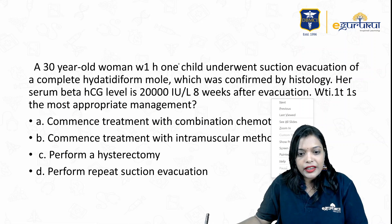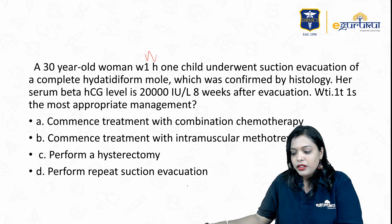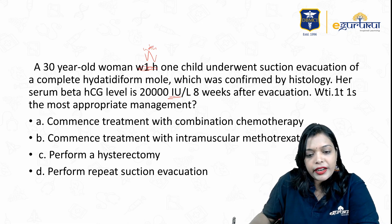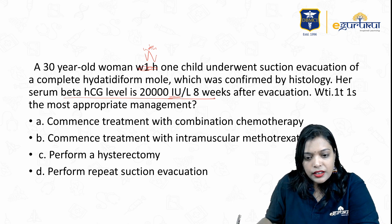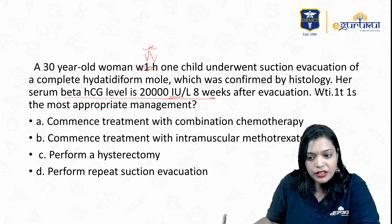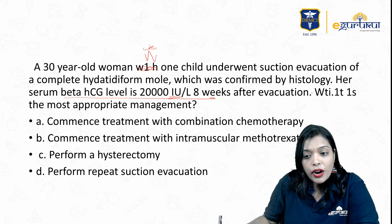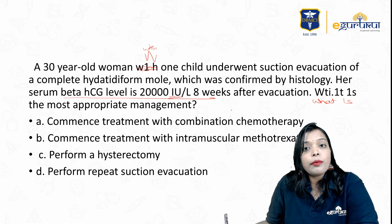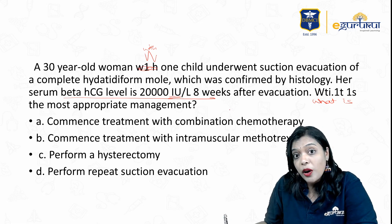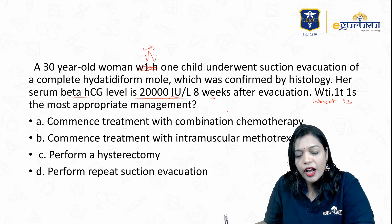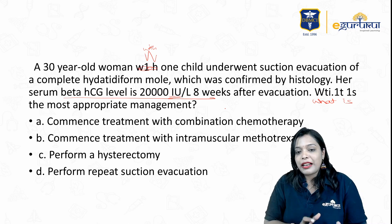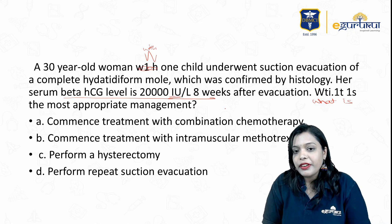A 30-year-old woman with one child underwent suction and evacuation of a complete hydatidiform mole, confirmed by histology. Her serum beta-HCG levels are 2 lakhs international units per litre 8 weeks after evacuation. What is the most appropriate management? After suction evacuation, normally when you are monitoring beta-HCG, beta-HCG should drop down. But here, instead of dropping down, by 8 weeks it has gone to 2 lakhs IU/L — definitely suggesting malignancy, that is choriocarcinoma.